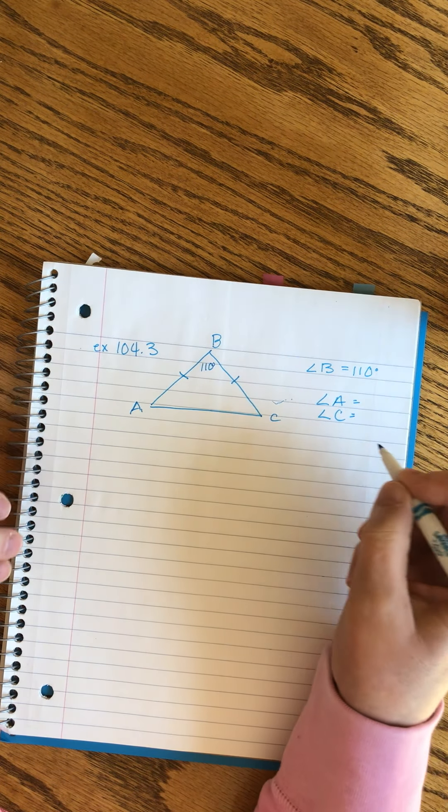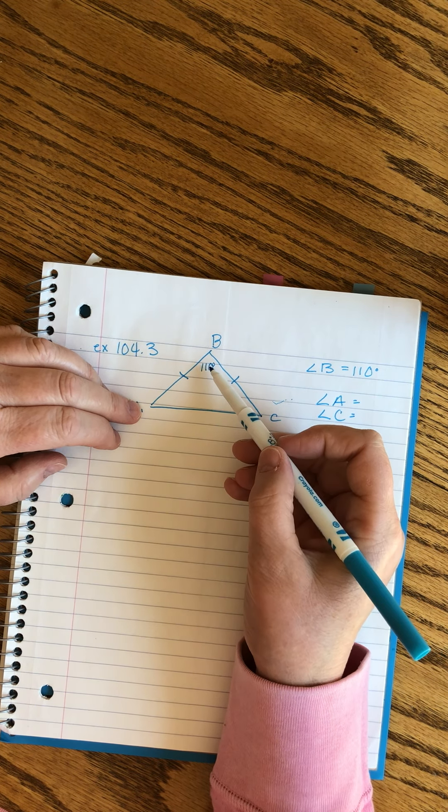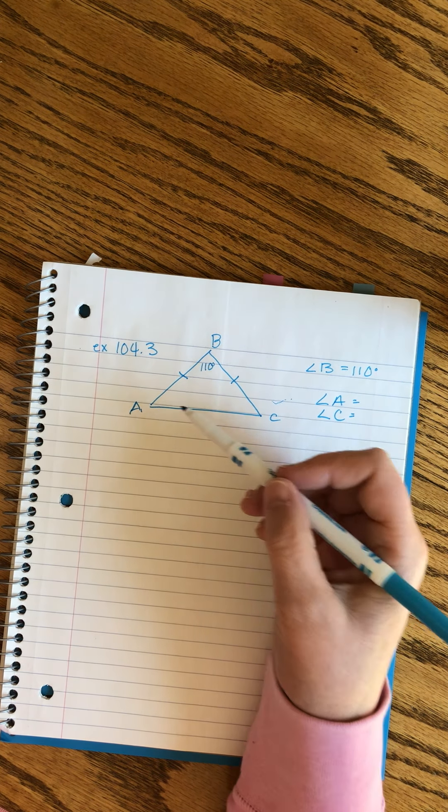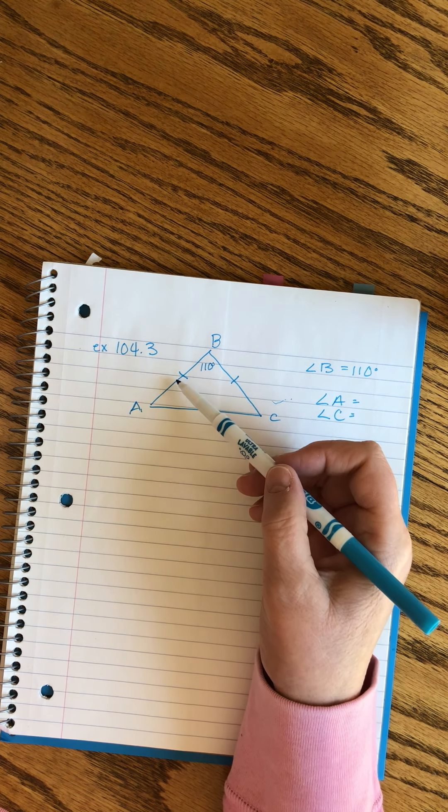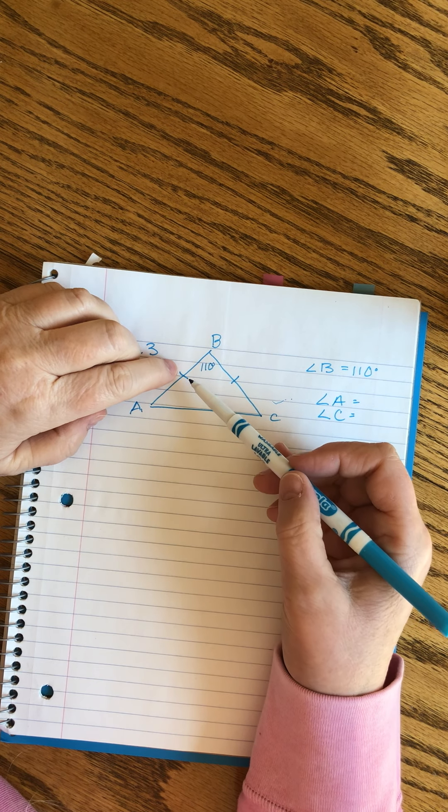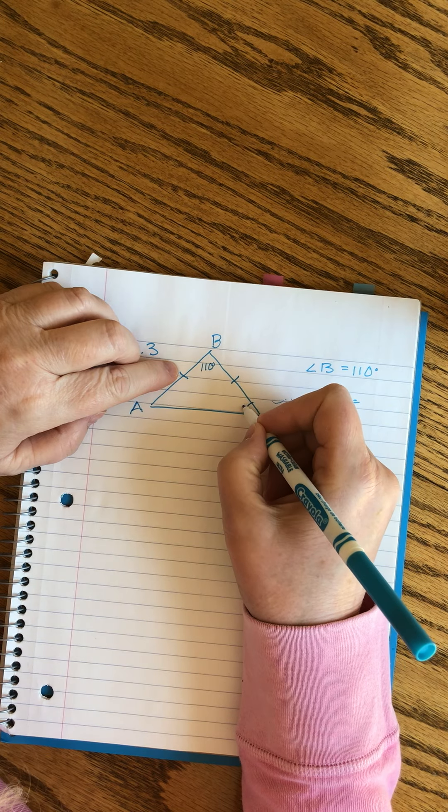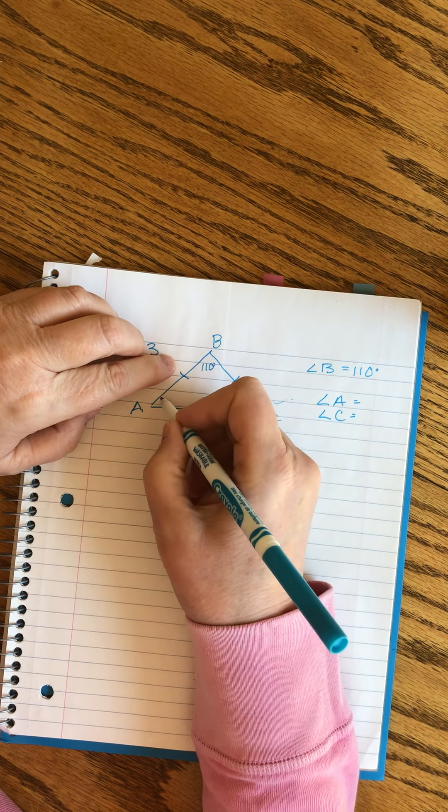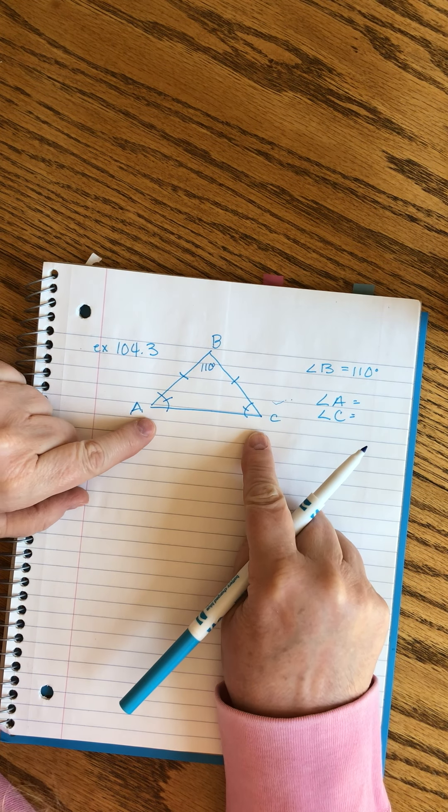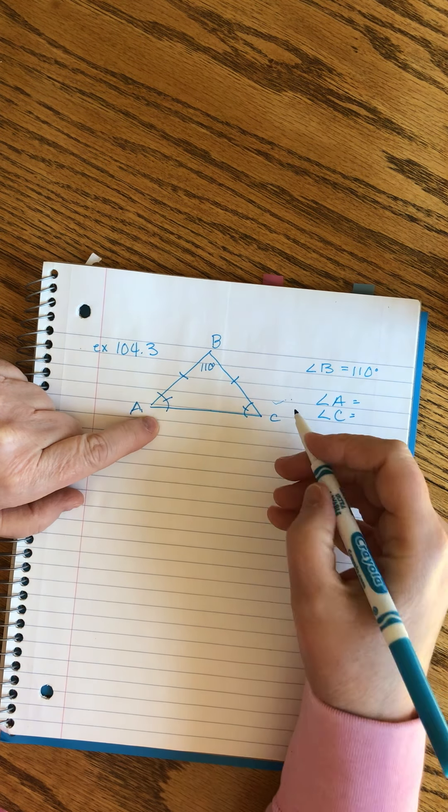How are we supposed to know how much these are? We know they have to add up to 70, right? Because 180 minus 110 is 70 for the two of them. But how do we know how much is angle A and how much is angle C? Well, these little T-rex arms are the answer. If these sides are the same, we know there's a relationship between the side and the opposite angle. So that means if these sides are the same, then their corresponding angles must also match.